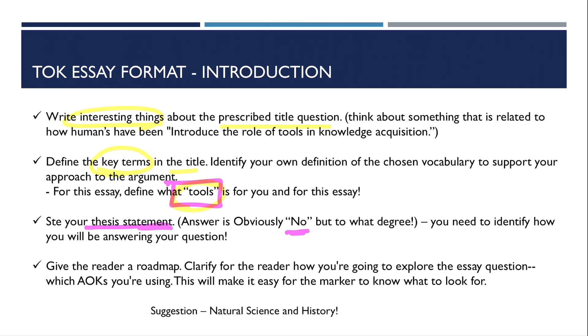So you need to identify how you will be answering your question. So choose from the four aims that we have discussed. Choose one of them, one of four aims. And give the reader a roadmap. Clarify for the reader how you're going to explore the essay question and which AOKs you're using. This is important because the question says that you have to choose the two AOKs. So you must identify the two AOKs that you're using. And this will make it easy for the marker to know what to look for.